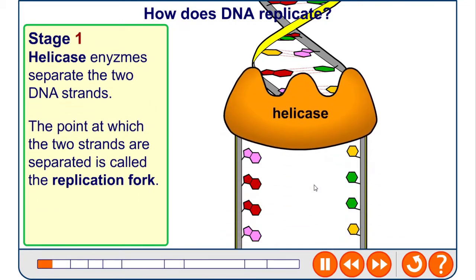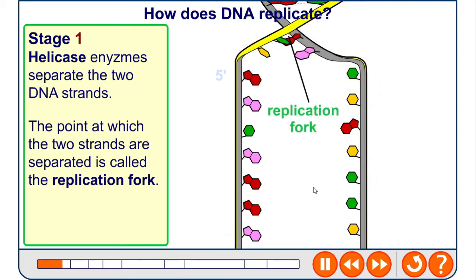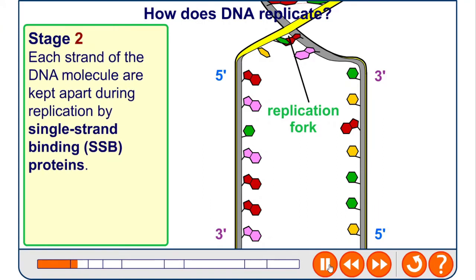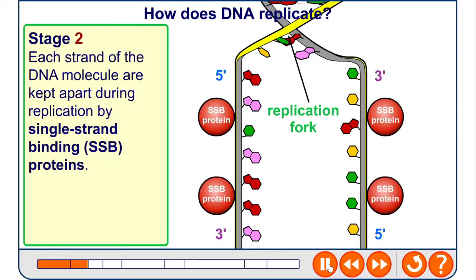The first stage is helicase enzymes separate the two strands apart. The point where they're separated is called the replication fork, which moves along the DNA molecule. Each strand gets kept apart by single-strand binding proteins, which prevents the molecule from recombining.